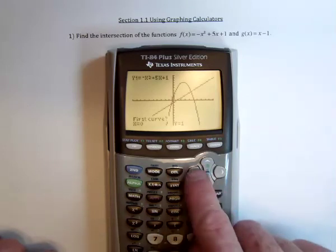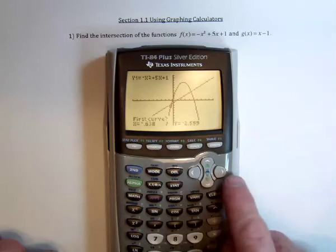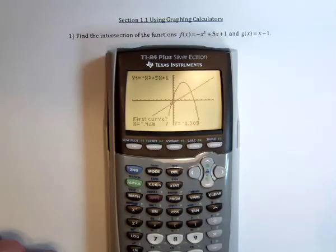The best and fastest way to do this is move the cursor close to where you think they intersect. And hit enter. Hit enter again. And a third time. And then it finds the intersection.